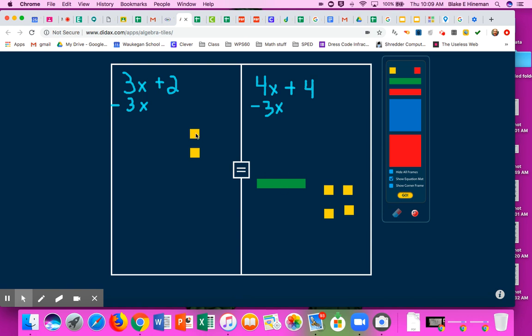So we end up with 1 x over here. And we end up with 2 over here. And that's usually what we end up writing. We say, okay, now I have 2 equals 1 x or I'm just going to say x plus 4.